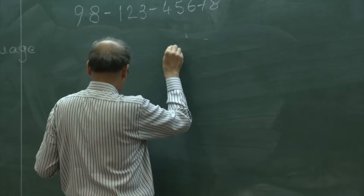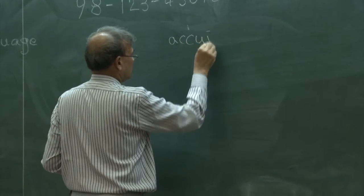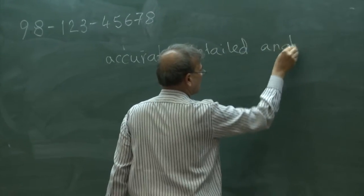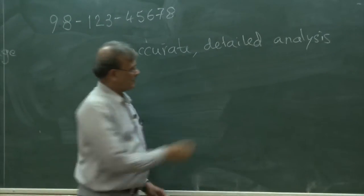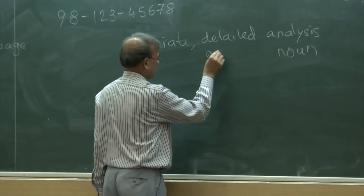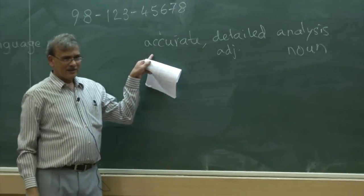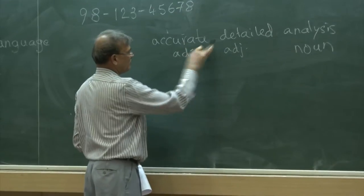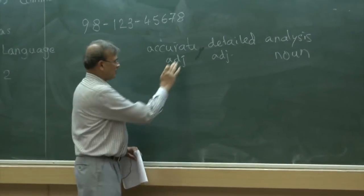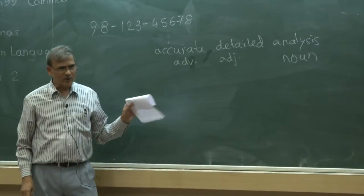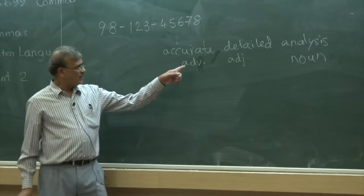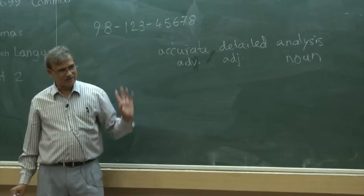So technically: 'analysis' is a noun, 'detailed' is an adjective, and 'accurate' is also an adjective. If you remove 'detailed,' then 'accurate' is not looking at the noun directly — it becomes an adverb. An adverb normally modifies the verb, but an adverb can also modify another adjective or another adverb. The comma serves the purpose of indicating whether a word is functioning as an adverb or an adjective, and the meaning can change accordingly.